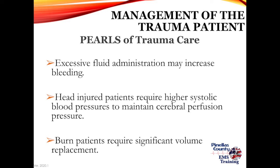Head-injured patients should never have a systolic blood pressure less than 90 mmHg. This gets complicated in multi-system trauma patients who may be bleeding internally. We want to manage their blood pressure — not too high, but definitely not too low. For all head injury patients, maintain end-tidal CO2 between 35 and 45. The only time we'd drop it below 35 is if the patient is actively herniating — seizing or posturing — meaning they are dying in front of us.